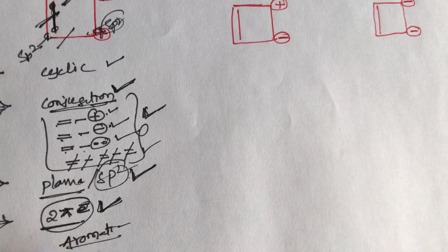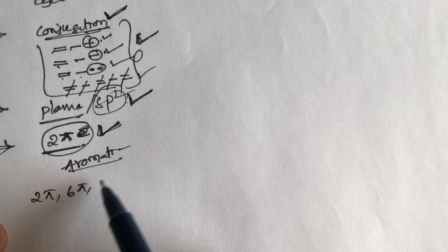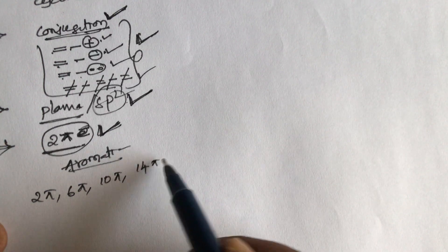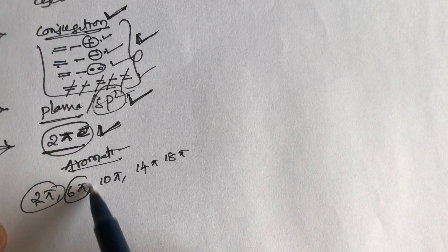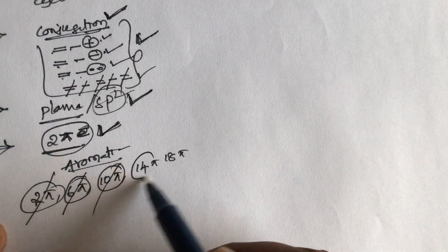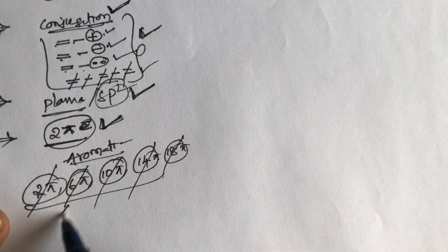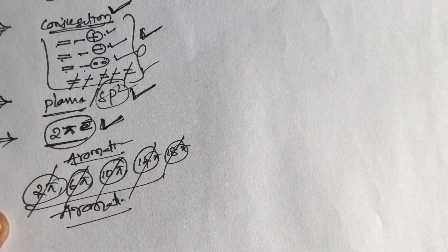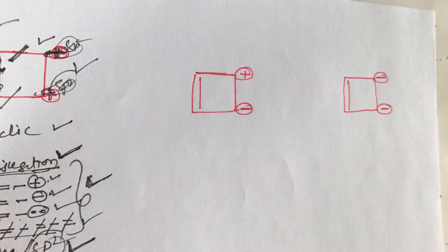Aromatic compounds contain 2, 6, 10, 14, or 18 pi electrons — these all belong to aromatic. So the first compound belongs to aromatic.